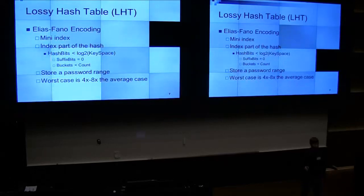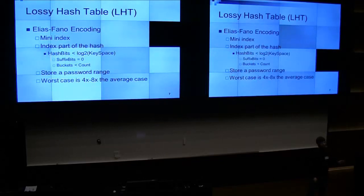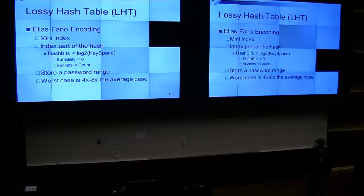For Elias-Fano, each tiny bin separated by a bit of one will have no more than fifteen elements, and you can do a binary search in there, so you're only going to hit at most four of them.